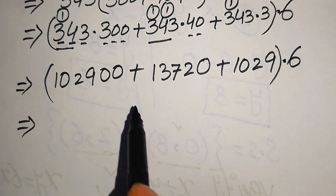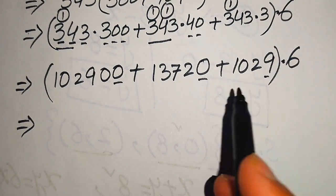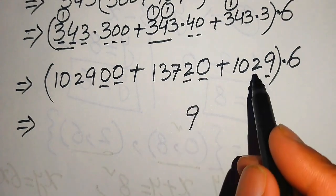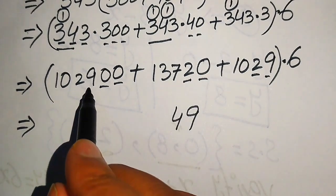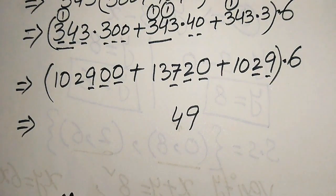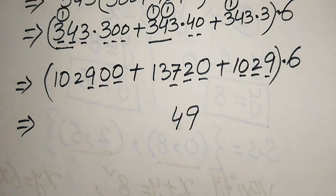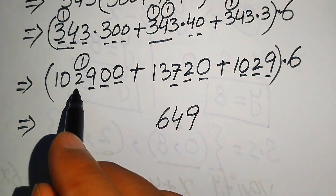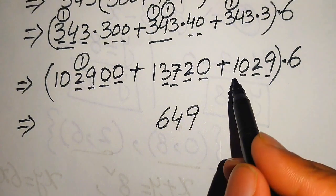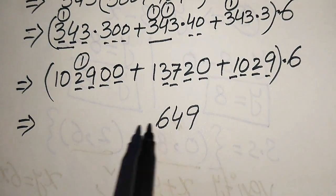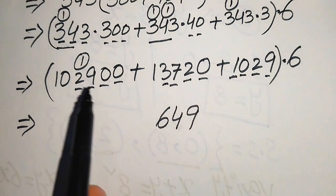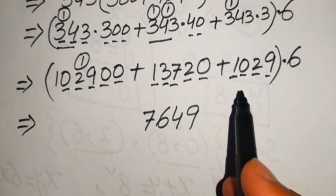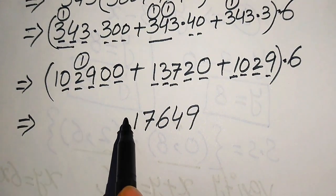We now sum the three partial products. Adding column by column: 0 plus 0 plus 0 is 0, plus 9 gives 9; next column: 0 plus 2 plus 2 is 4; then 9 plus 7 is 16, plus 0 is 16 — write 6 carry 1; then 2 plus 3 plus 1 is 6; 2 plus 3 plus 1 is 6; 6 plus 1 is 7; and finally 1. This gives us 117,649.